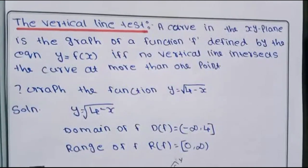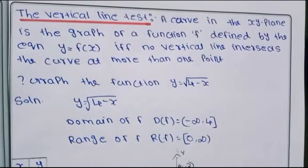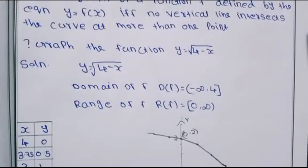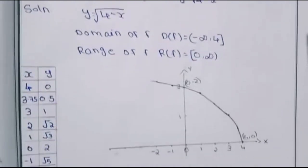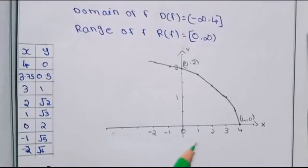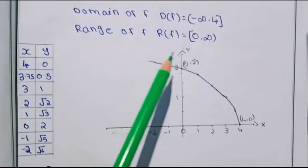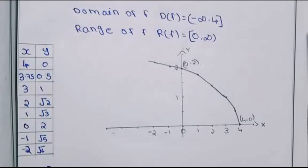We have a graph of y is equal to root of 4 minus x. The domain is negative infinity to 4, and the range is 0 to infinity. A vertical line drawn on this graph intersects at only one point, so that is a function. This is the vertical line test.